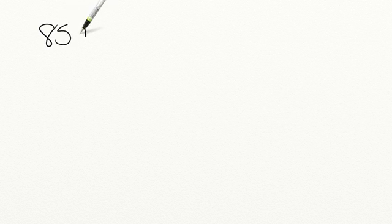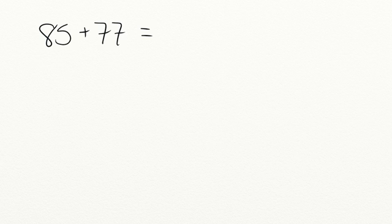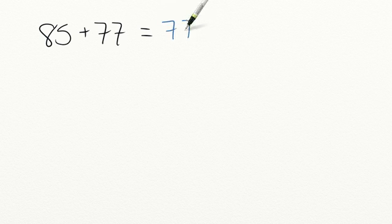Let's go ahead and practice what you've learned today. Starting with this equation: 85 plus 77 equals — use the commutative property to finish this equation. Remember, A plus B is equal to B plus A. So 85 plus 77 has an equal value to 77 plus 85.